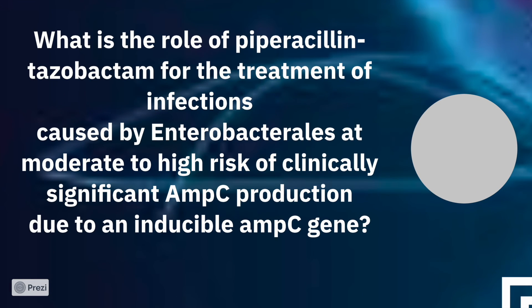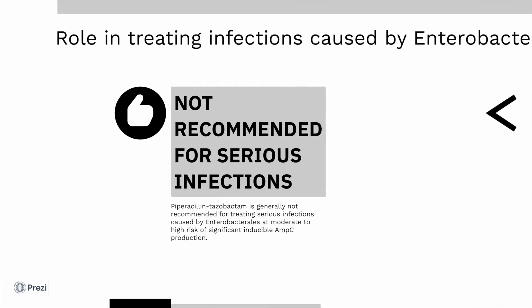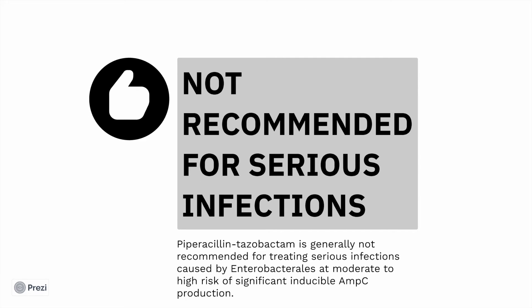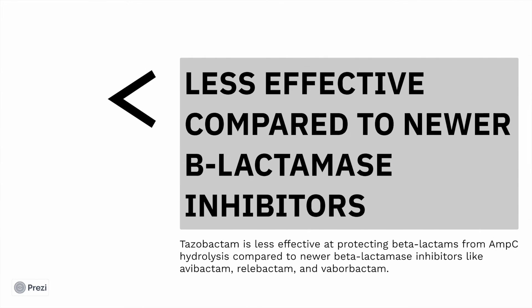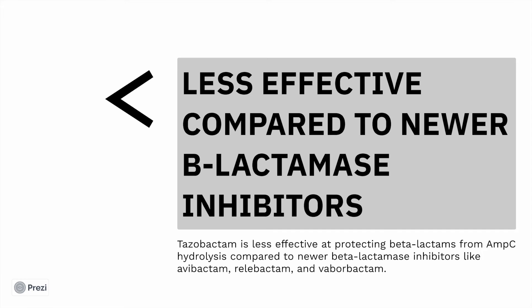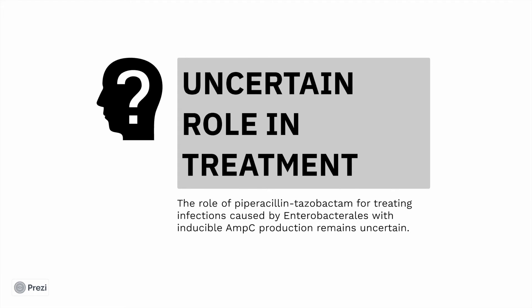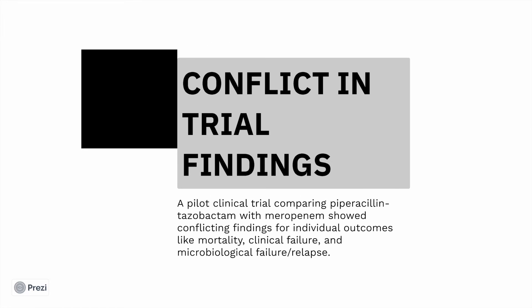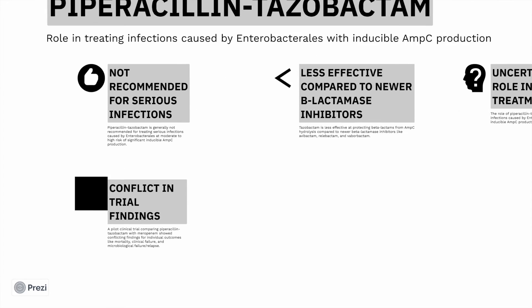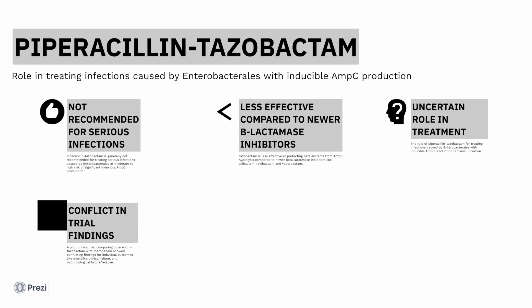Next is the role of piperacillin-tazobactam in this group. It is not recommended to give piperacillin-tazobactam in patients who have inducible AMP-C. Tazobactam is the main problem here because it is less effective in protecting the beta-lactam from AMP-C. The role of piperacillin-tazobactam for treating infections caused by organisms with inducible AMP-C production remains uncertain. Conflicting trials have not clearly shown differences in outcomes, but piperacillin can induce AMP-C production and tazobactam is ineffective in preventing hydrolysis, making this an inappropriate choice for this group of bacteria.